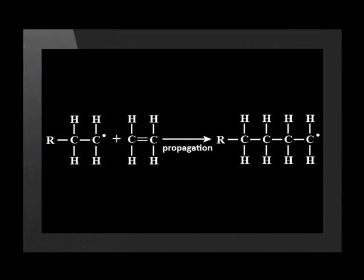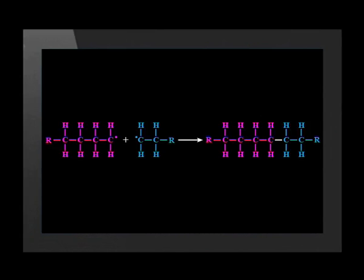I'm sure you can guess how this molecule gets longer. If we draw the new radical next to another monomer of ethene, we can see that the same thing happens once more. This is called propagation. Sometimes two radicals form a bond, and this stops the polymerization.